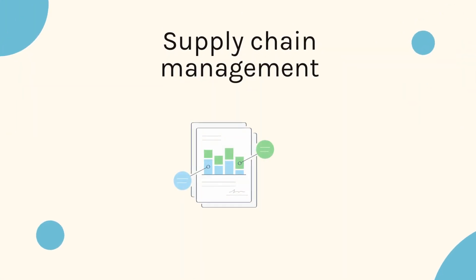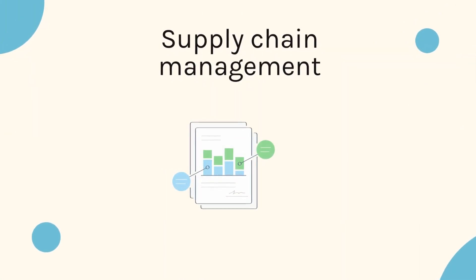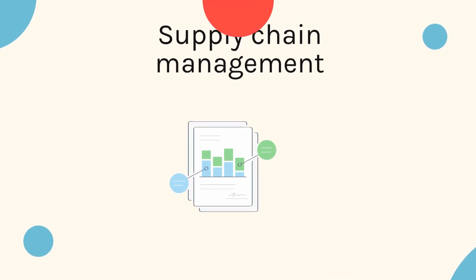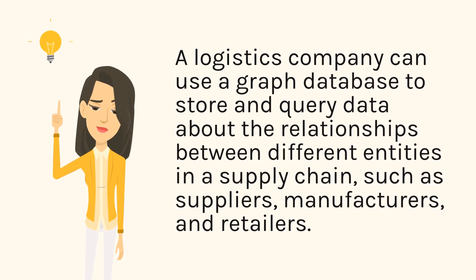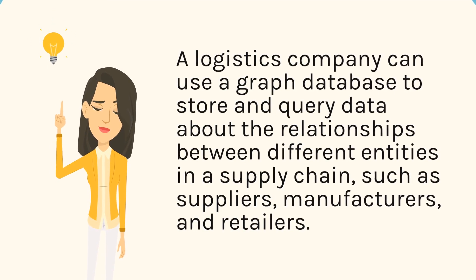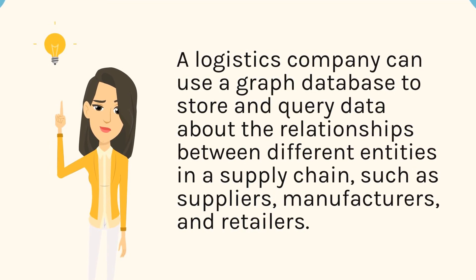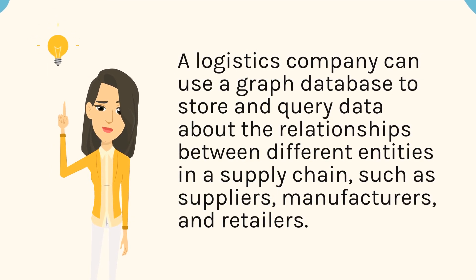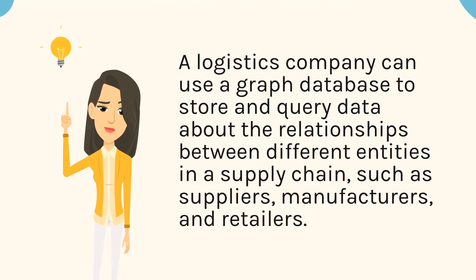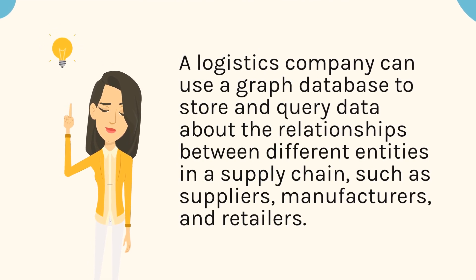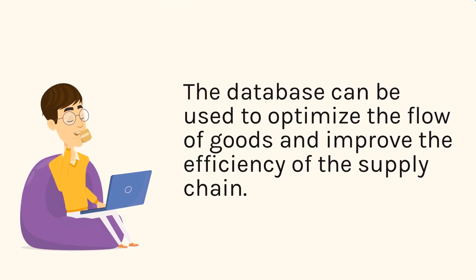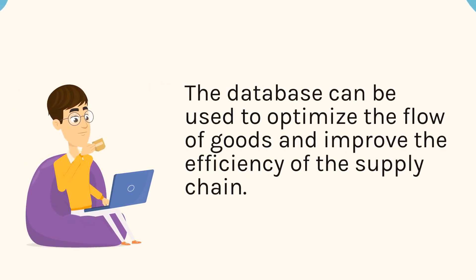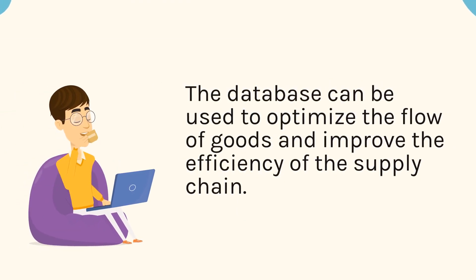Supply chain management — a logistics company can use a graph database to store and query data about the relationships between different entities in a supply chain, such as suppliers, manufacturers, and retailers. The database can be used to optimize the flow of goods and improve the efficiency of the supply chain.